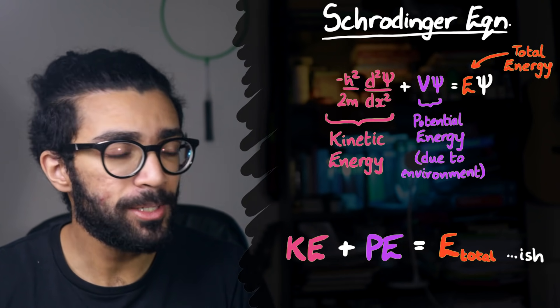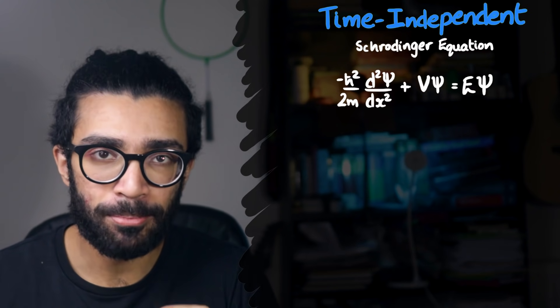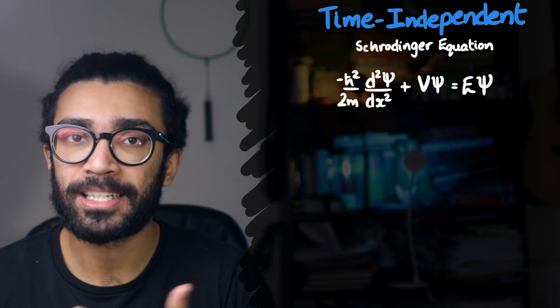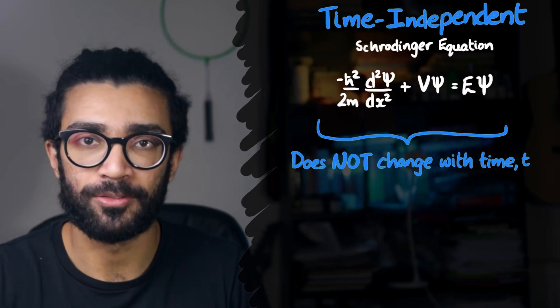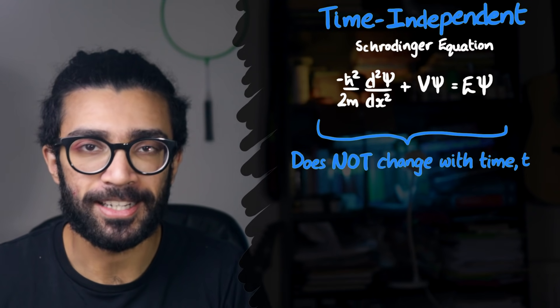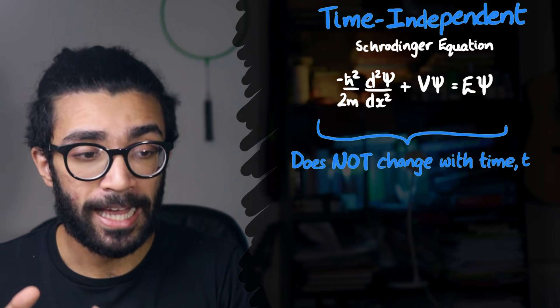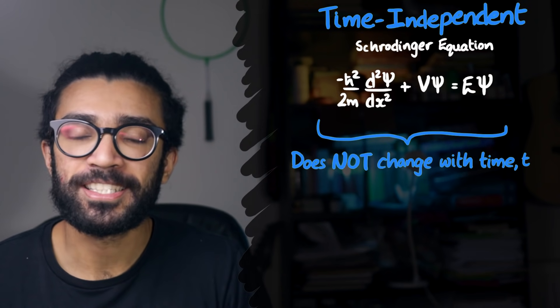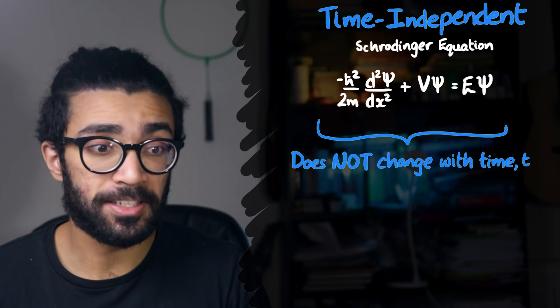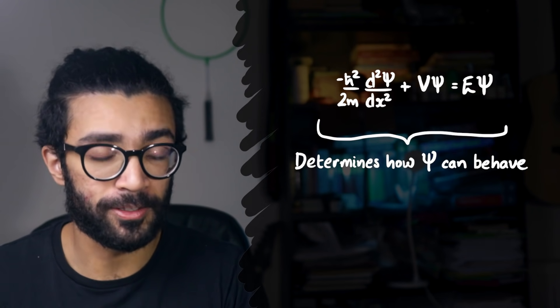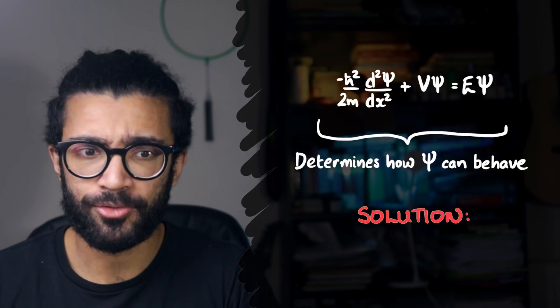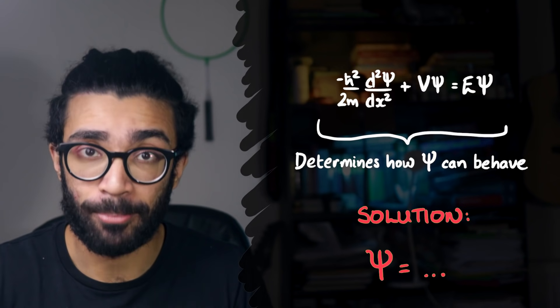Also, it's worth noting that we're only working with the time-independent Schrödinger equation. So basically the total energy doesn't change over time, it's constant. But this is kind of the point. Like I said, we want to be working with the simplest version of this equation and then looking at how to solve it. So basically the terms in the Schrödinger equation tell us something about the behavior of the wave function and solving the Schrödinger equation just means finding what psi can be.